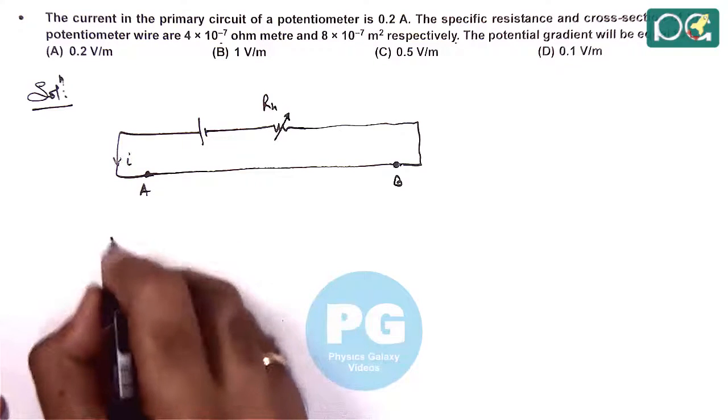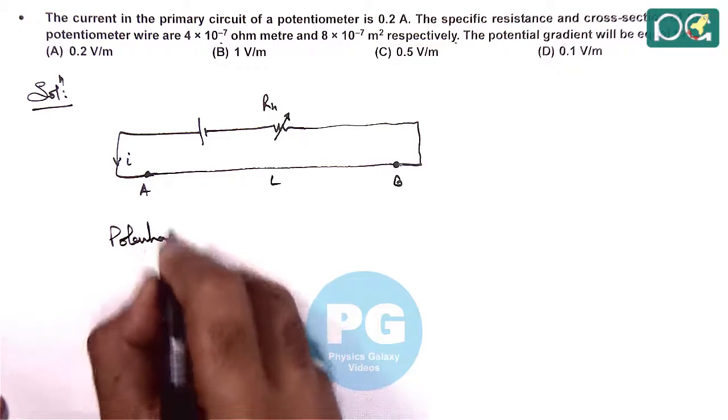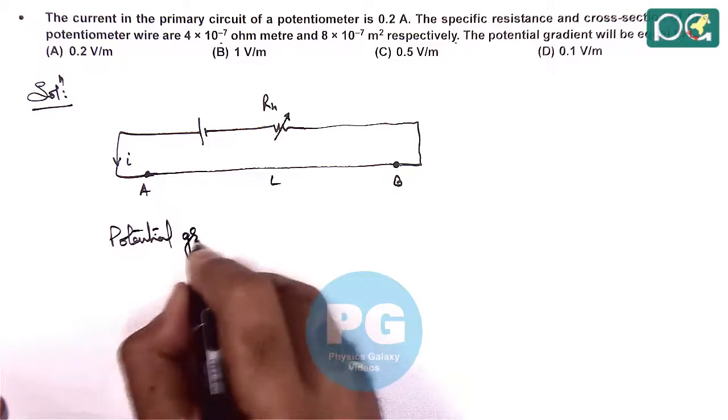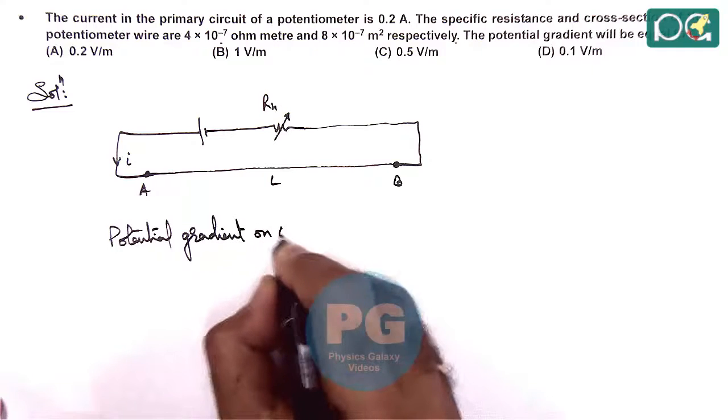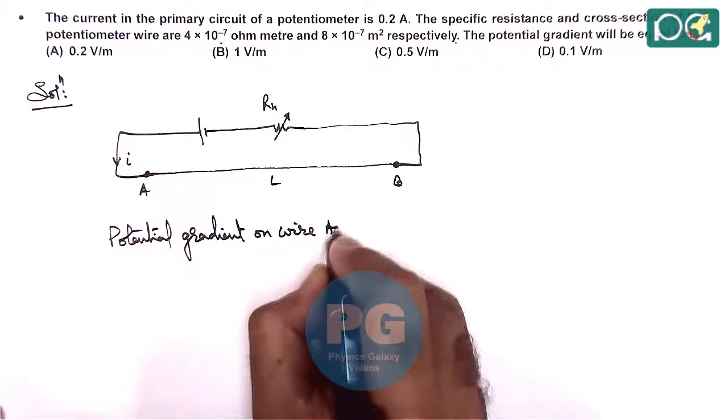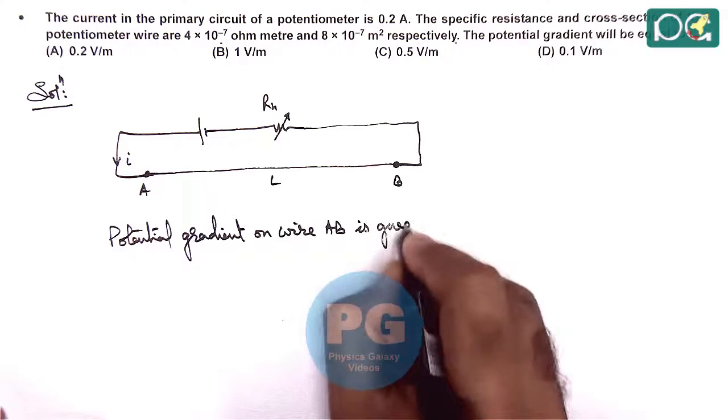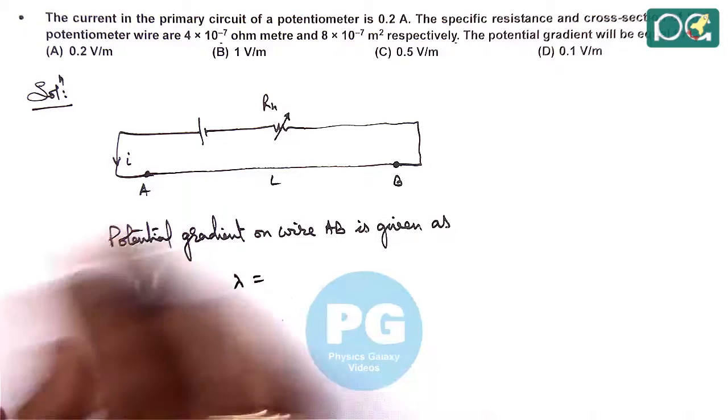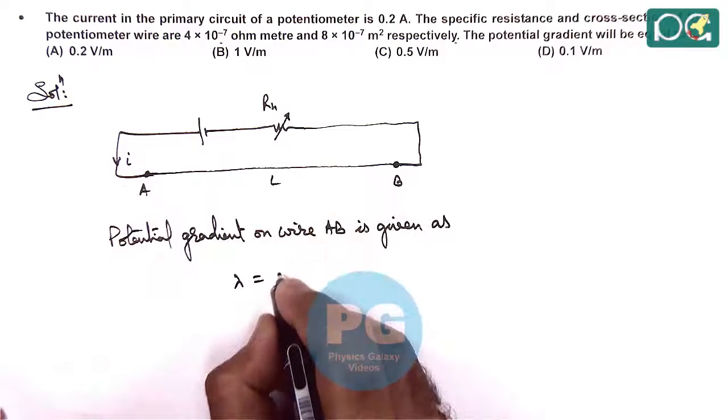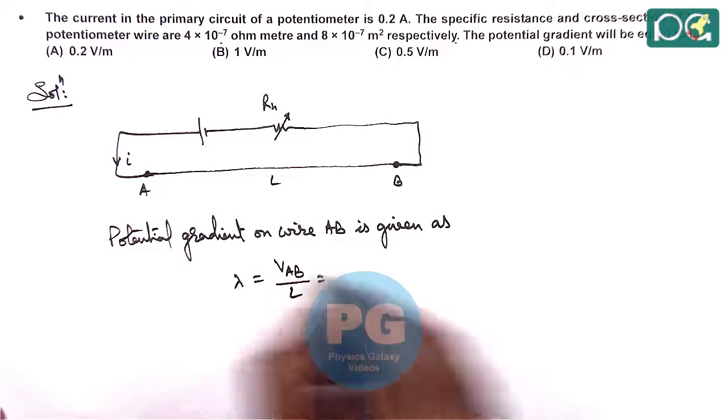And we know if the wire is of length L, potential gradient on wire AB is given as lambda, and the value of lambda we write as VAB divided by L, and VAB we write as IR by L, if R is the resistance of this potentiometer wire.